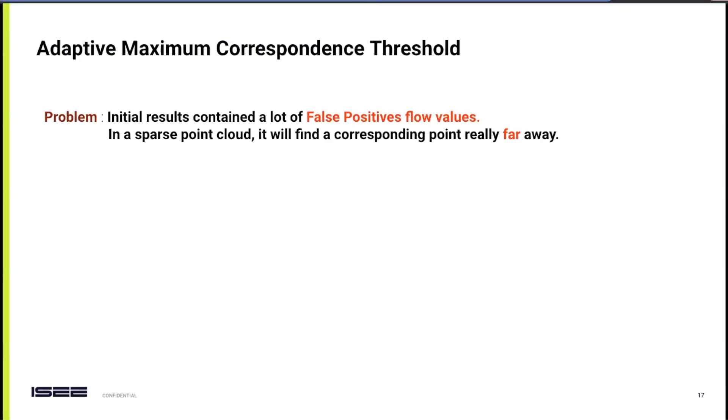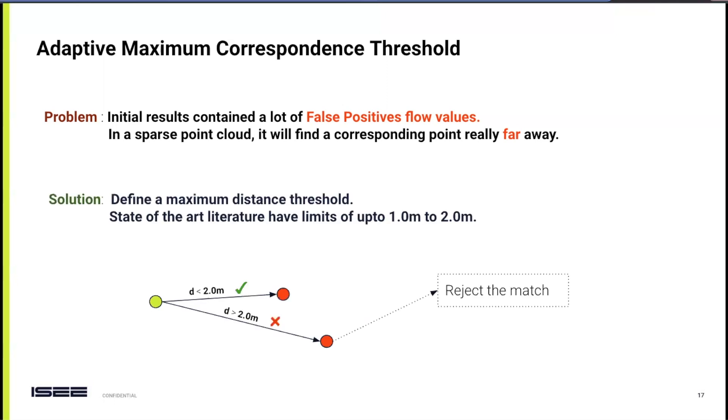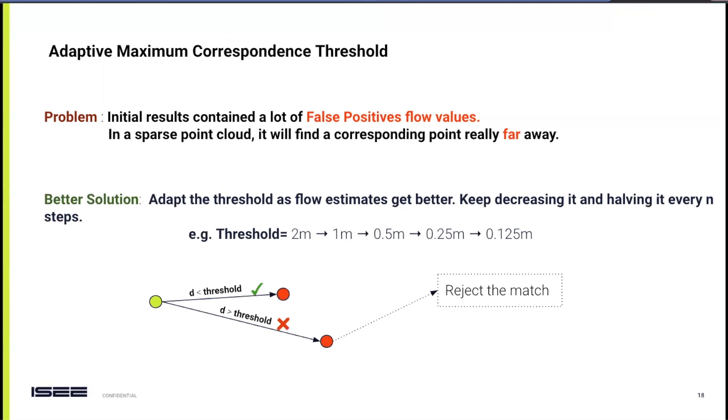In the initial application of the revised fit function, we encountered a significant hurdle: the prevalence of false positive flow values. Particularly in sparse point clouds, the system was erroneously matching points that were far apart, leading to inaccuracy. A breakthrough came with the implementation of a maximum distance threshold. The rule was simple: if a point fell within this threshold, we included it. If not, we excluded it. But we didn't stop there. We evolved the approach by dynamically adapting this threshold. As the flow estimation improved, we halved the threshold every n steps, refining our selection of points for correspondences in the target point cloud and focusing on those within a more immediate range.